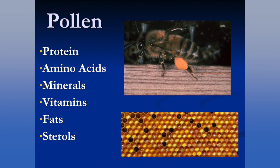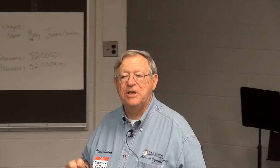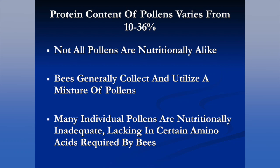When we think of pollen, we think of that pollen pellet on the hind legs that bees have gone out and collected. But bees also collect a lot of wind-borne pollens — pollens associated with grasses, ragweed, and corn — and those, even in quantity, are nutritionally very poor. So it's the pollen from floral sources that are most important. Many individual pollens are nutritionally inadequate, lacking in certain amino acids required by bees.